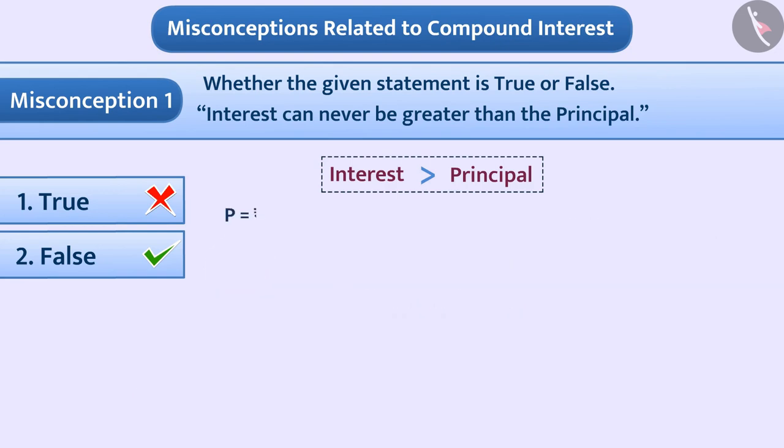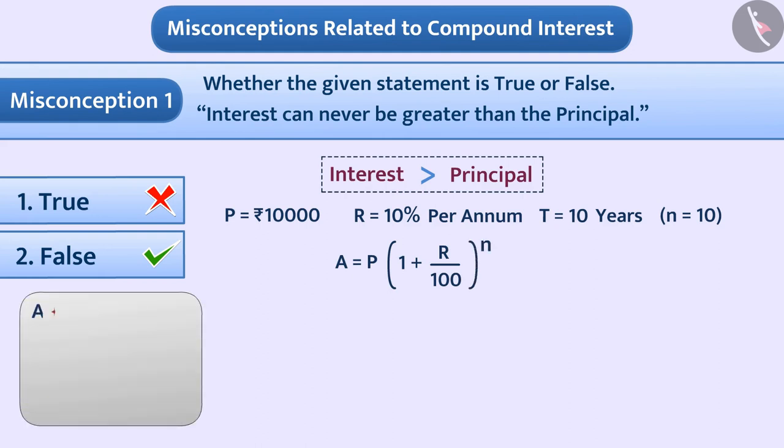Here, P is equal to rupees 10,000, R is equal to 10% per annum, and T is equal to 10 years. Means here n is equal to 10. We know that A is equal to P multiplied by (1 plus R by 100) raised to the power n, where variable A is total amount, P is principal, R is rate of interest, and n represents time period.